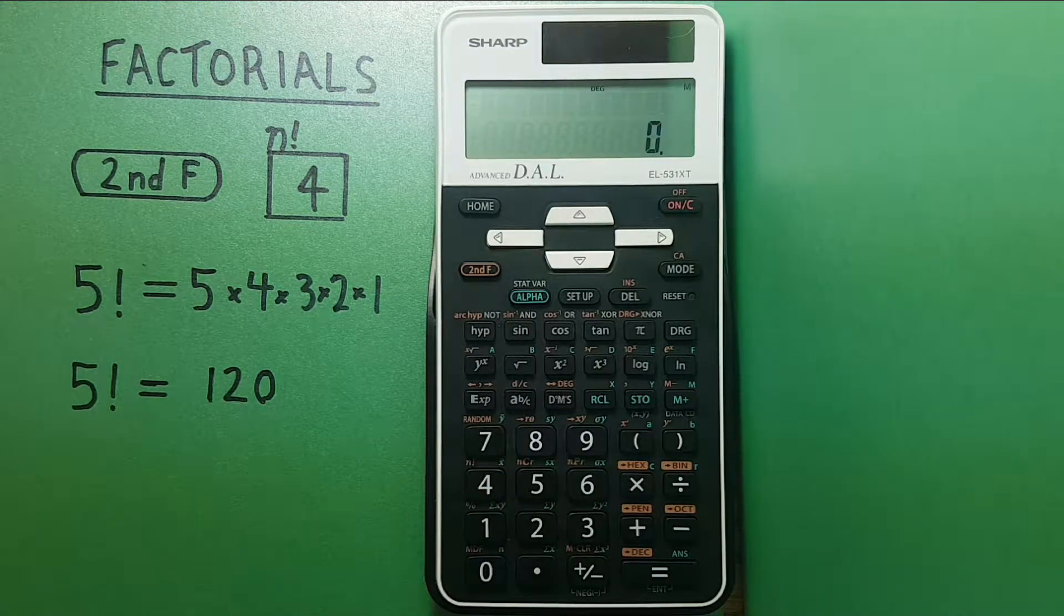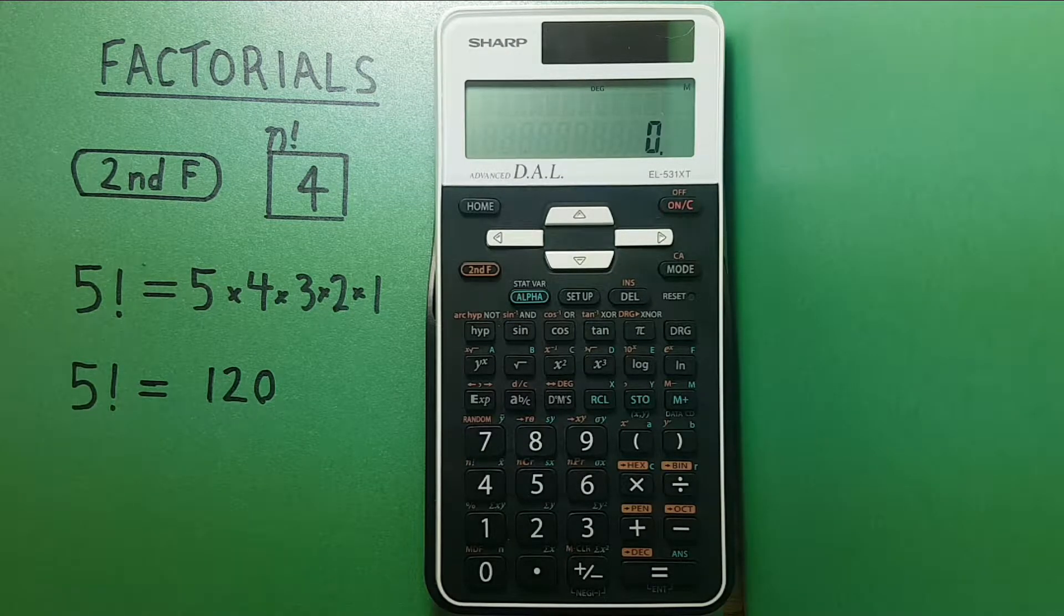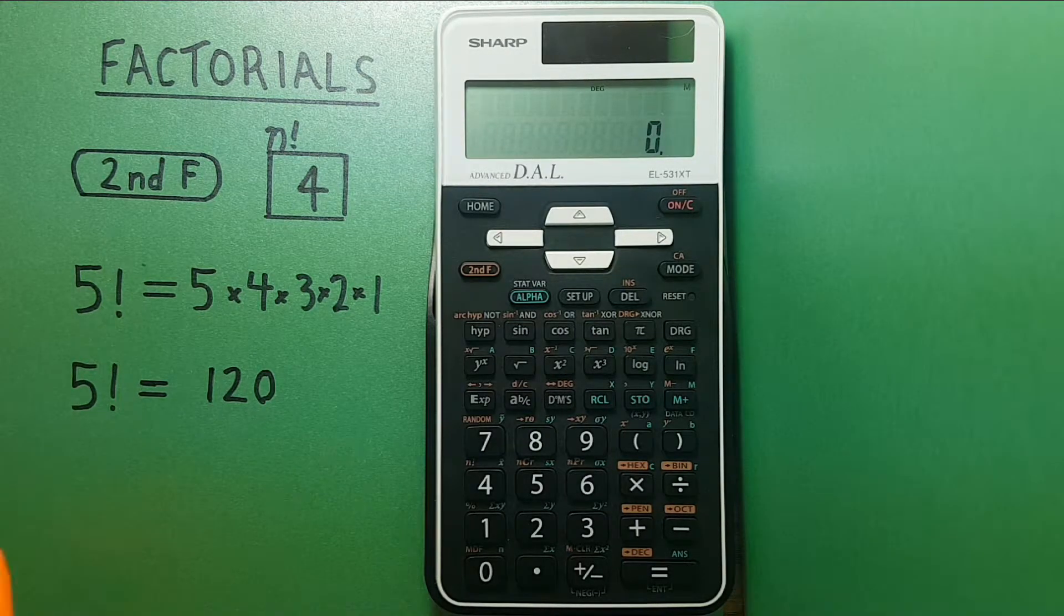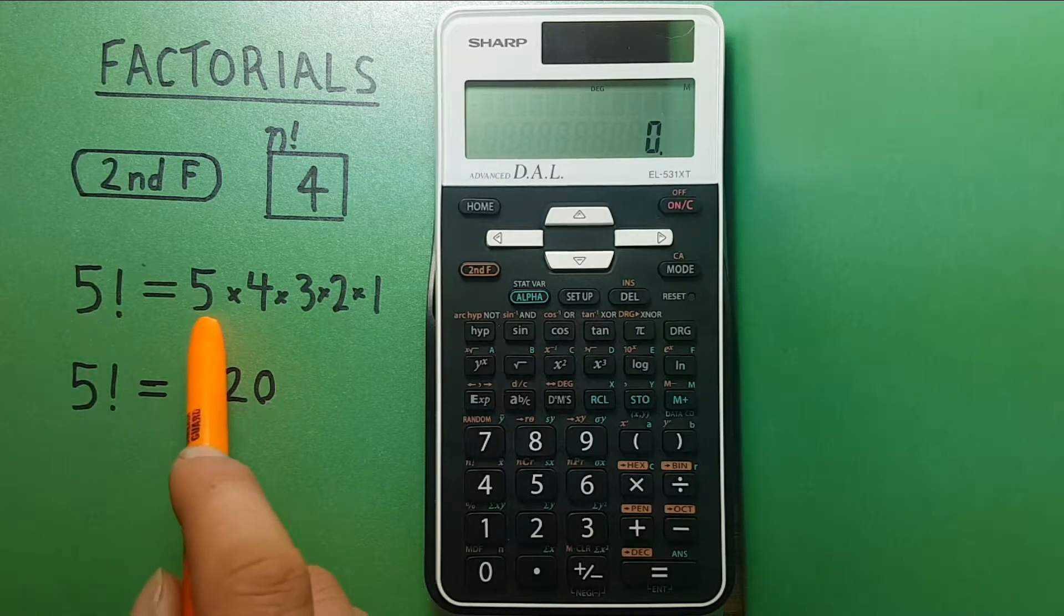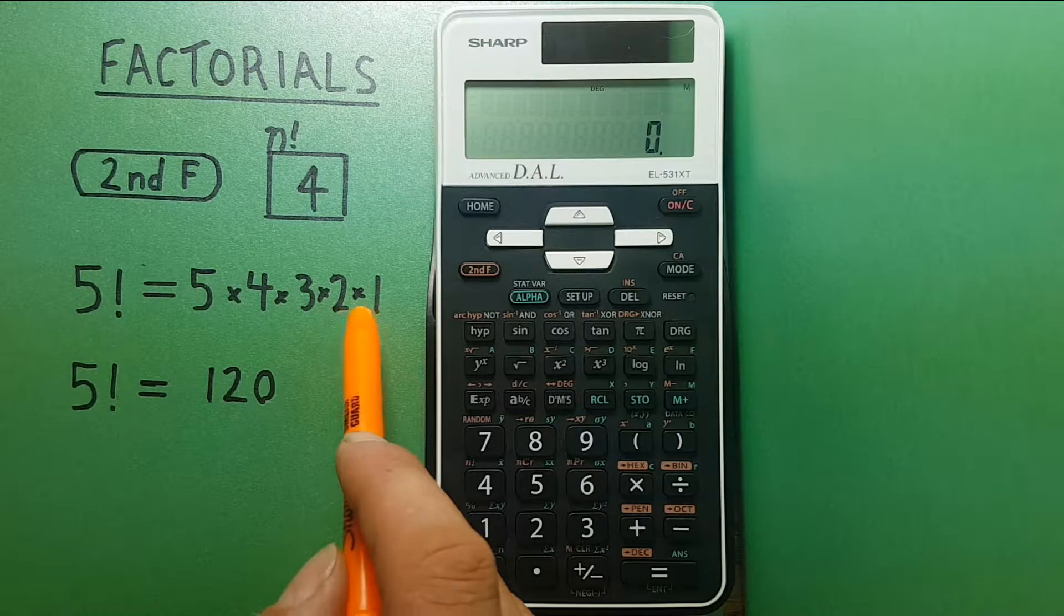We know a factorial is the number multiplied by all the whole integers below it. So 5 factorial would be the same as 5 times 4 times 3 times 2 times 1.